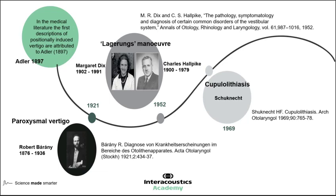Moving further into the 20th century, we encounter the very familiar names of Margaret Dix and Charles Hallpike, who working together in Queen Square, London, England, did the first in-depth analysis of 100 patients with this condition of benign paroxysmal positional vertigo. They devised the provoking manoeuvre — described in their literature as the Lageruns manoeuvre — that became the gold standard test for BPPV, particularly the posterior canal, which we now call the Dix-Hallpike test.